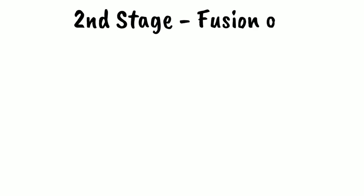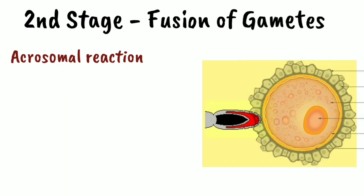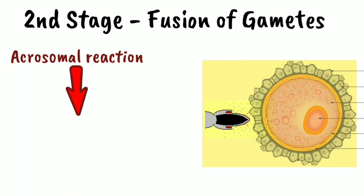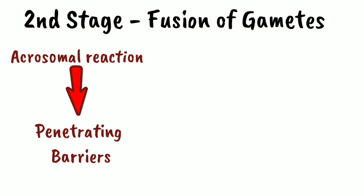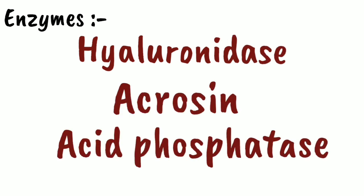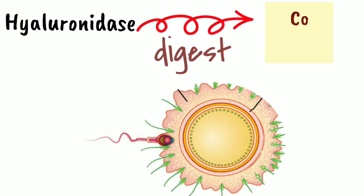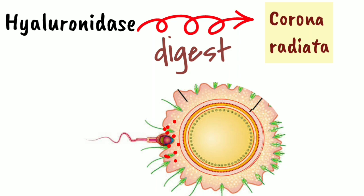The second stage is contact and fusion of the gametes. An important term here is the acrosomal reaction: when the spermatozoan encounters the ovum, it releases enzymes which help it penetrate the barriers and fertilize the ovum. These enzymes are hyaluronidase, acrosin, and acid phosphatase. The hyaluronidase enzyme digests the cells of the corona radiata, causing disintegration of that barrier.